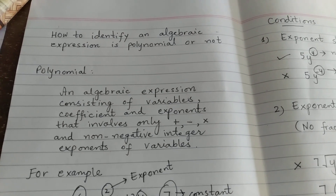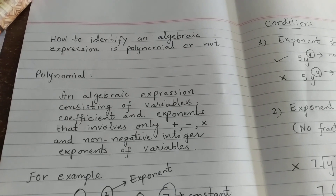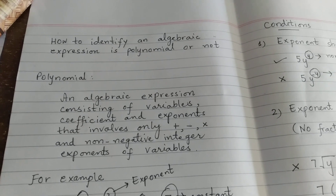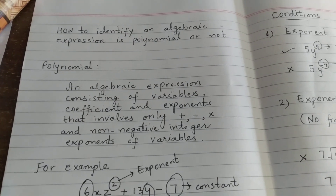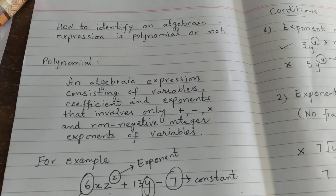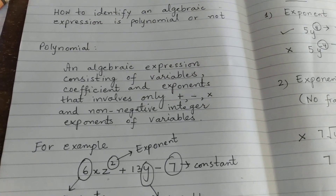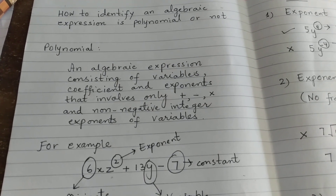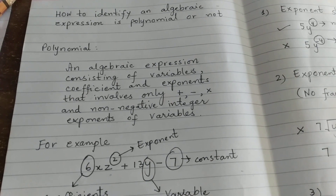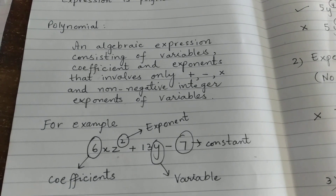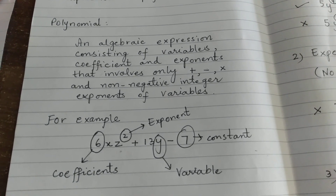Today our topic is how to identify an algebraic expression as polynomial or not. We should understand first what is a polynomial: an algebraic expression consisting of variables, coefficients and exponents that involves only addition, subtraction, multiplication and non-negative integer exponents of variables.